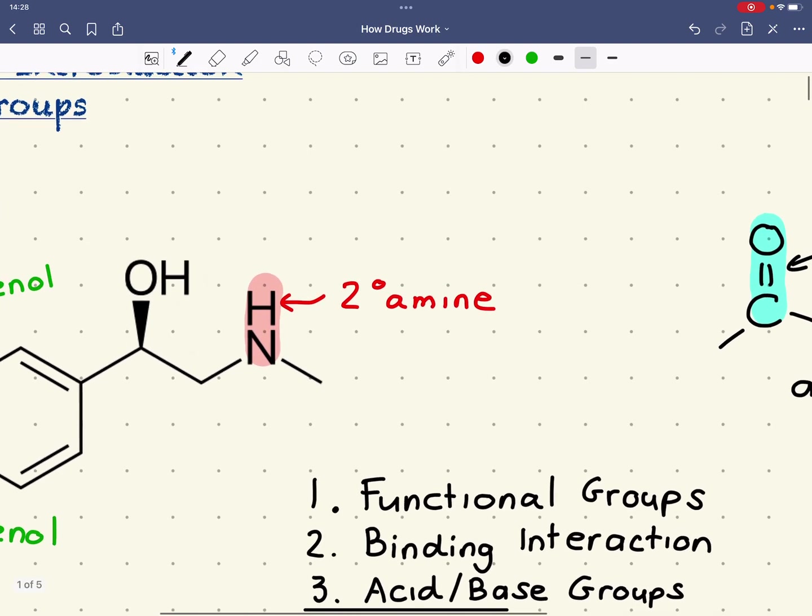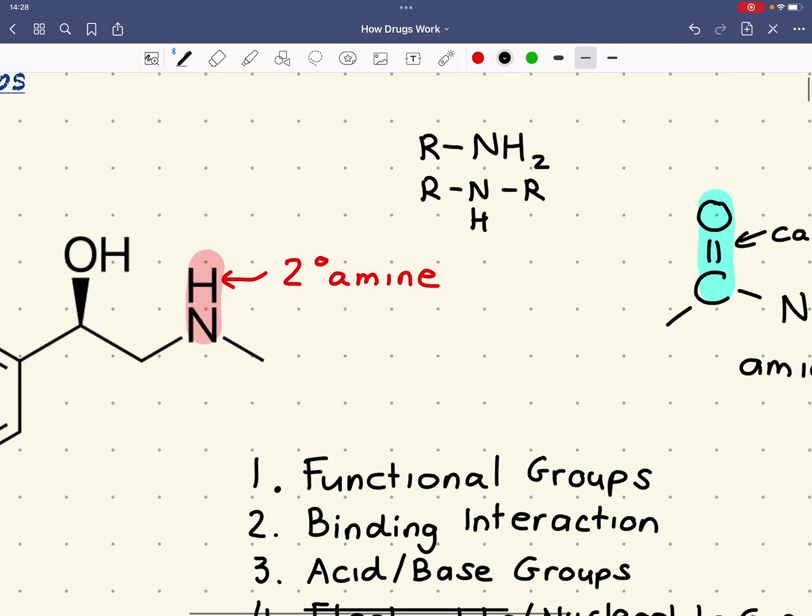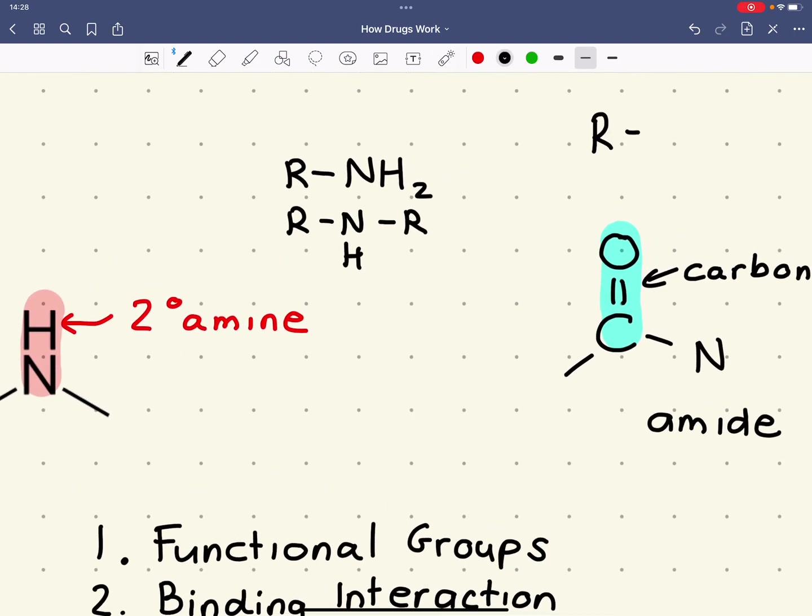Now, this is a secondary amine. So, of course, we need to be able to classify. A primary amine, of course, is this. A secondary amine is when we've got two R groups bonded to the nitrogen. In this case, we have the R group is here and here. Just to clarify, a tertiary amine would obviously have three R groups bonded to the N.